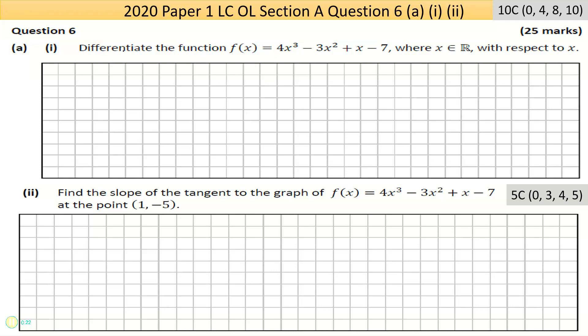Okay, so question six here is differentiation. I had a quick look at it before, but not a detailed one. Part one asks us to differentiate the function f(x) = 4x³ - 3x² + x - 7, so this is a cubic equation or a third-order polynomial.